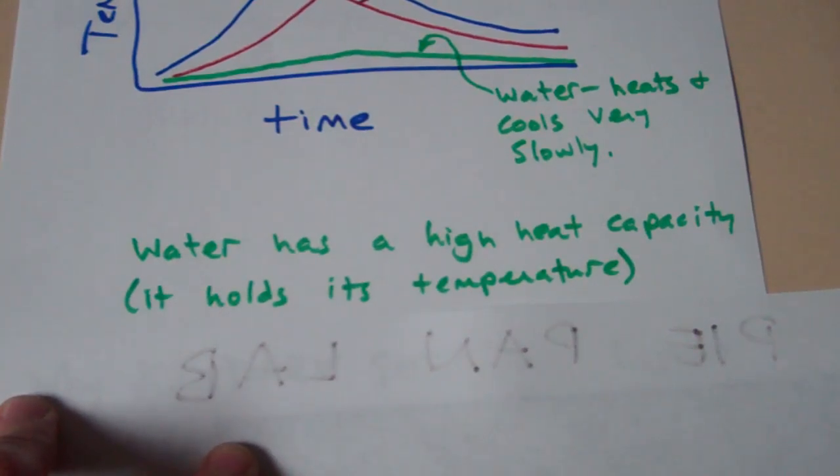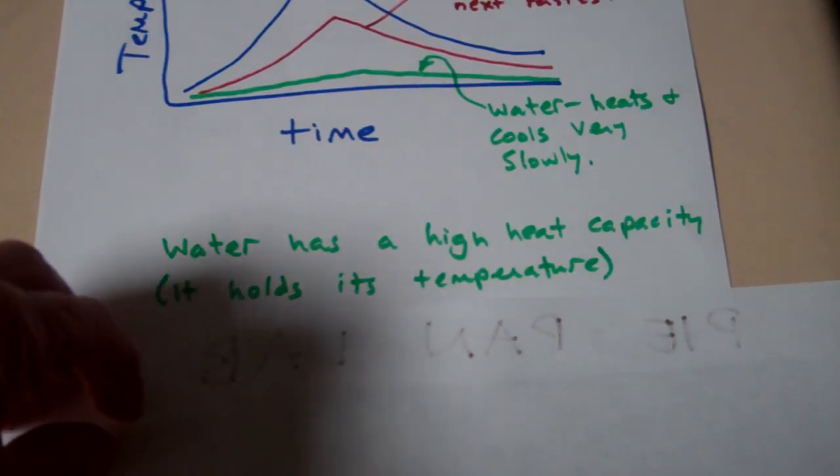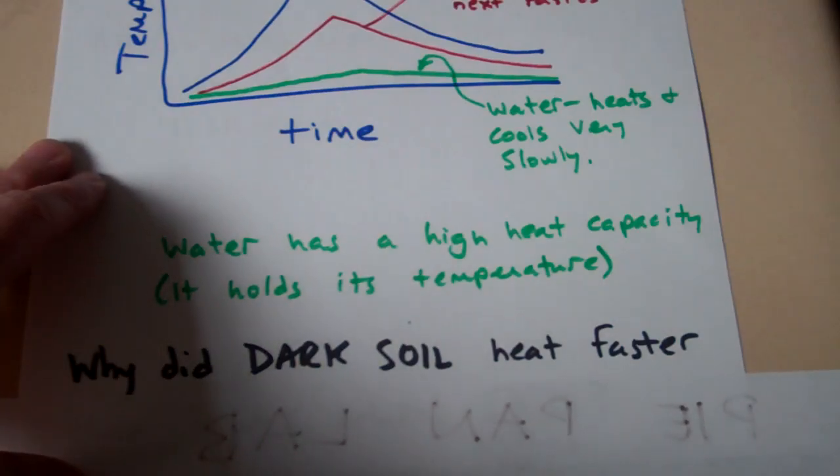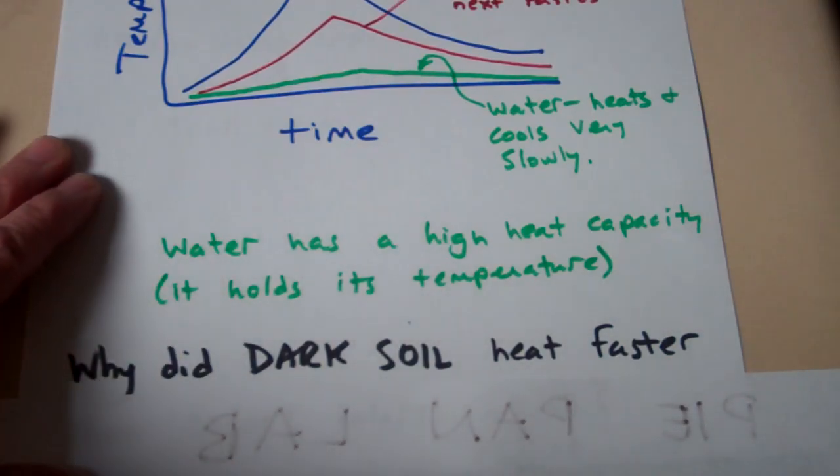The soil would have the worst or the lowest heat capacity. Now why did the dark soil heat up faster?